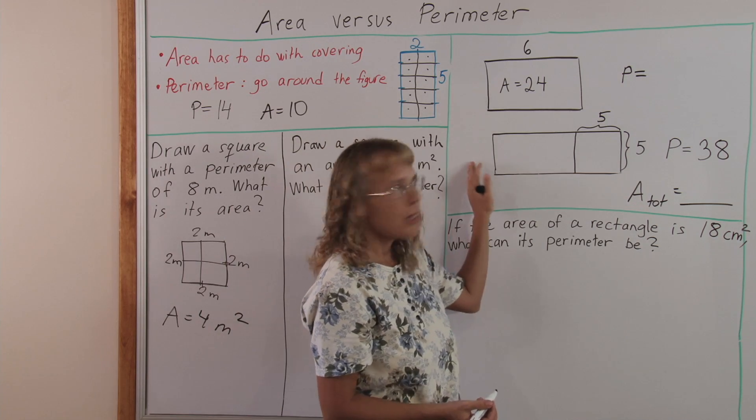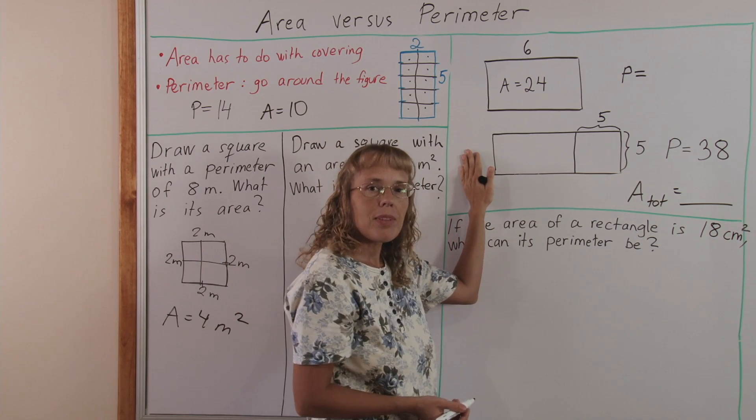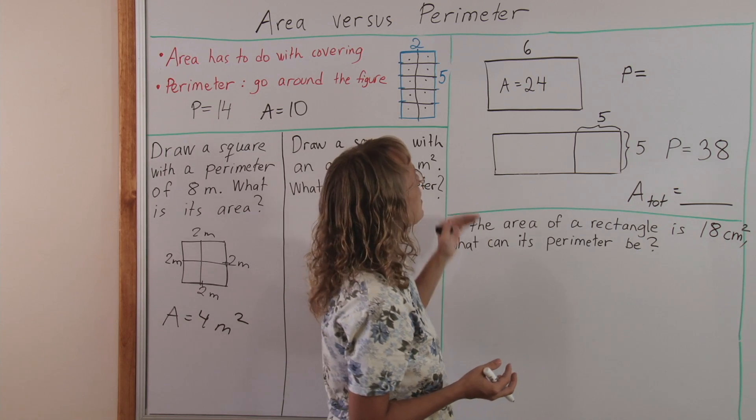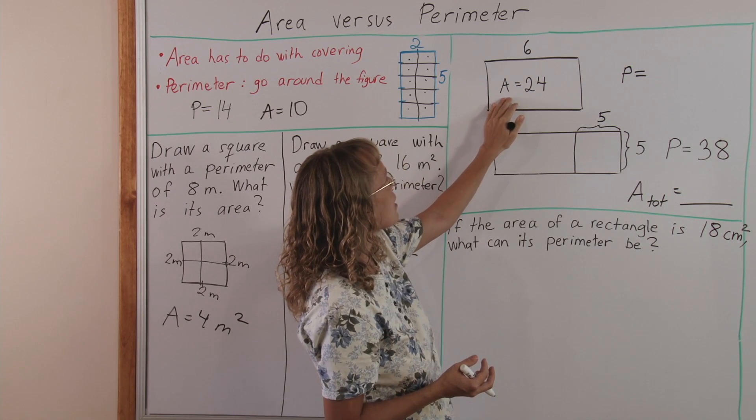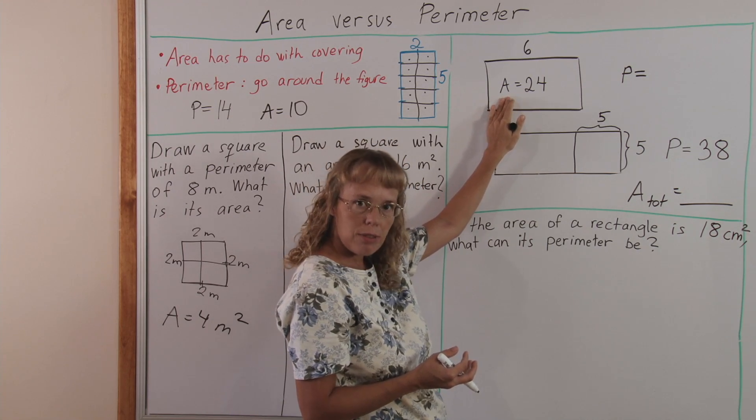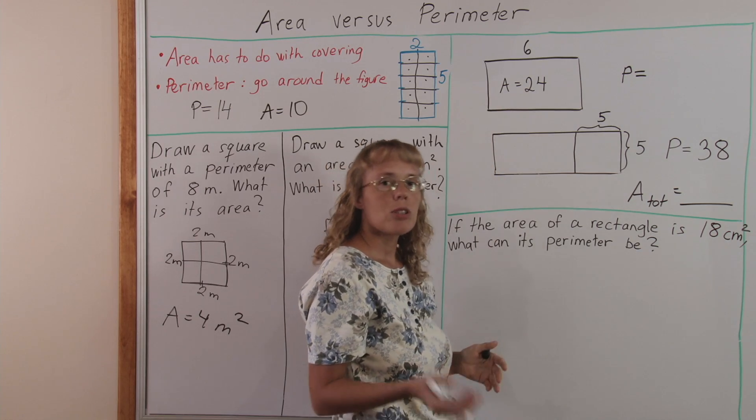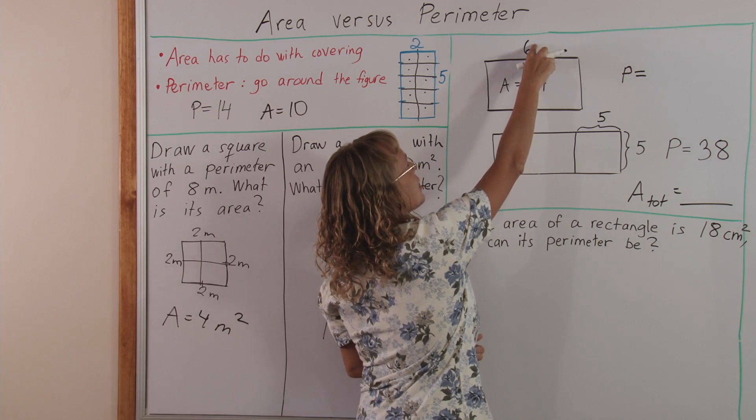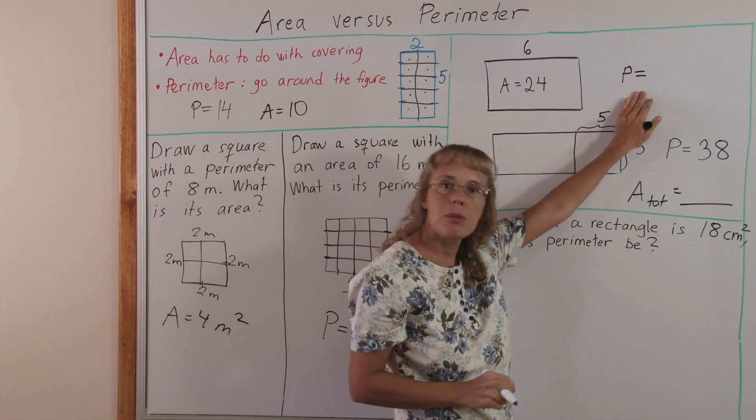Now these types of problems, some things are given and some things are asked. It is given us in this rectangle that its area is twenty-four. It means twenty-four square units, or twenty-four squares. And one side here is six, and we are asked the perimeter.